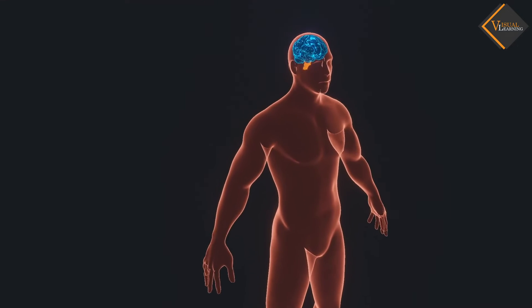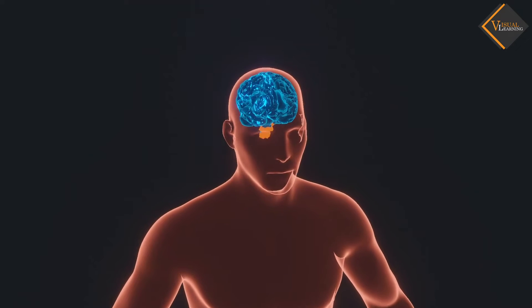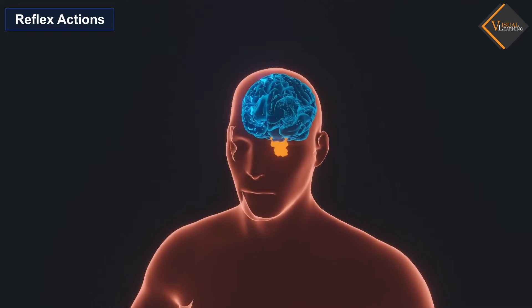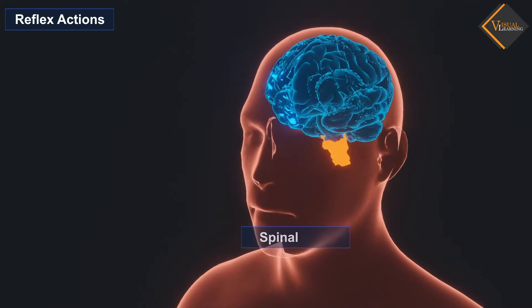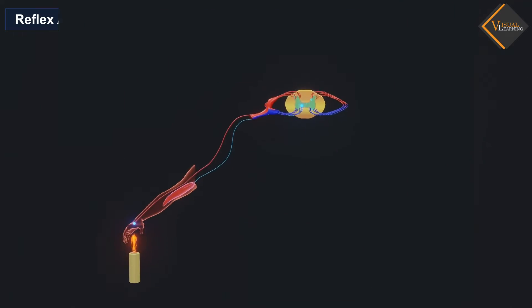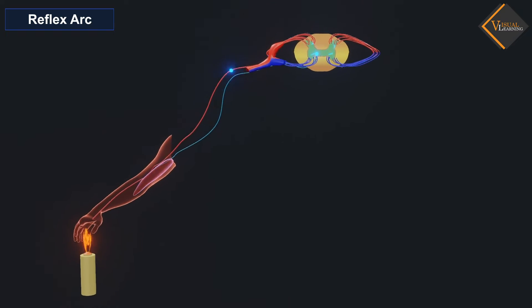They happen without much of a thinking process. In scientific terms, this action is called the reflex action. Here, the spinal cord has a major role to play. The reflex arc shows the pathway through which the reflex action occurs.